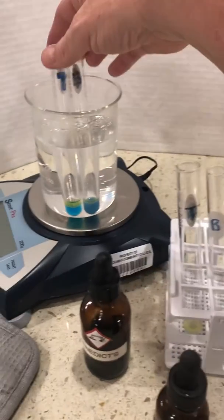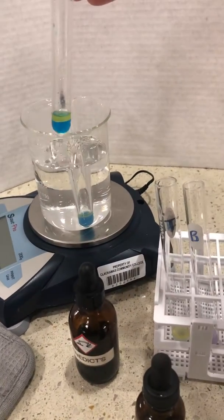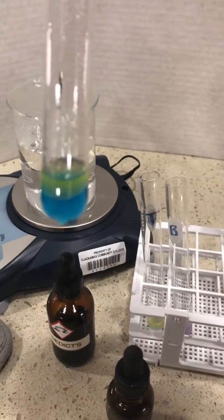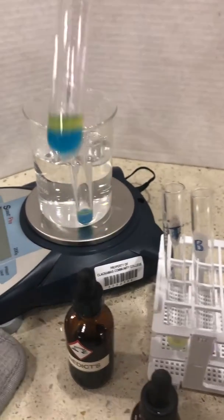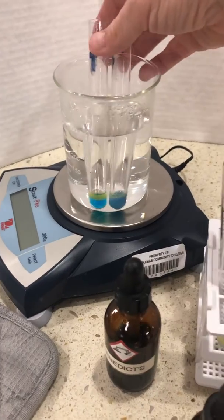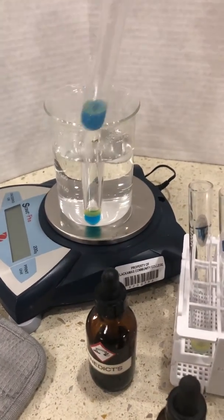A similar result is in the Benedict's. If you notice the top layer of the Benedict's, it also has the butter floating on top with the blue Benedict's beneath it. Here's the result for the bottom layer with Benedict's.